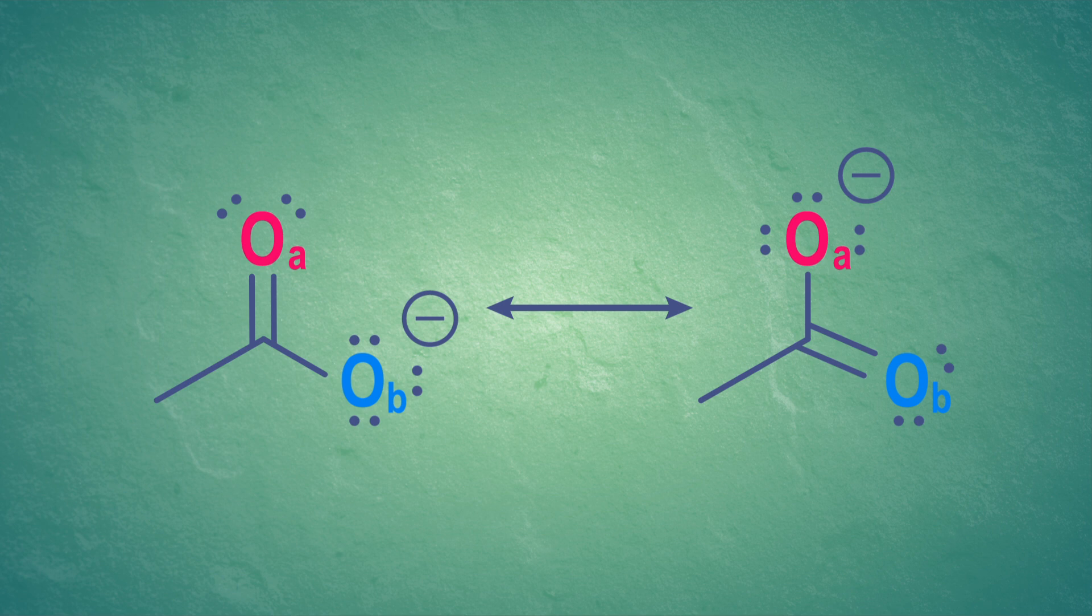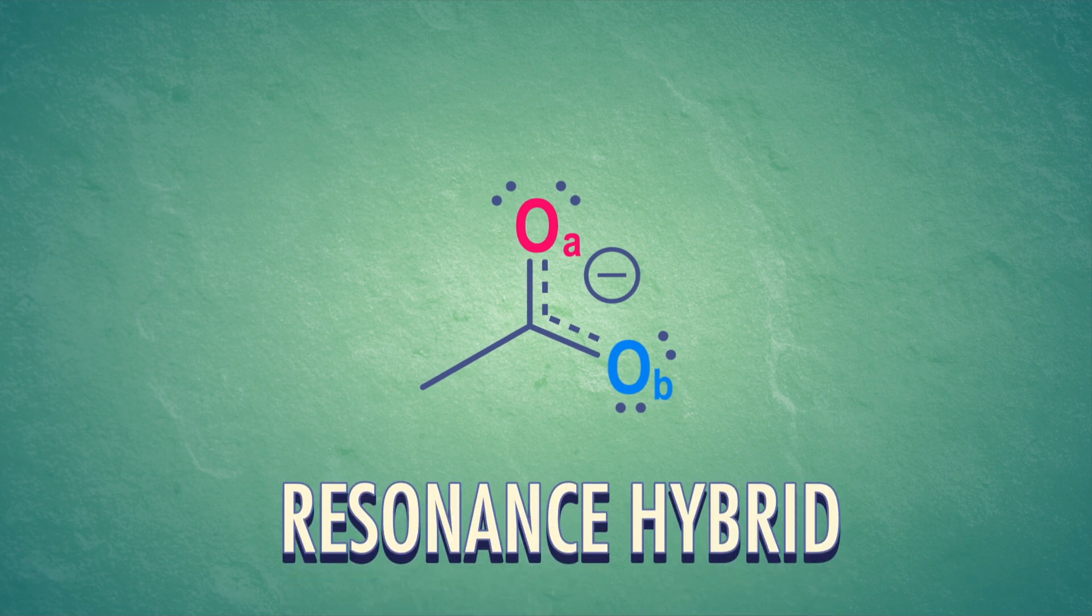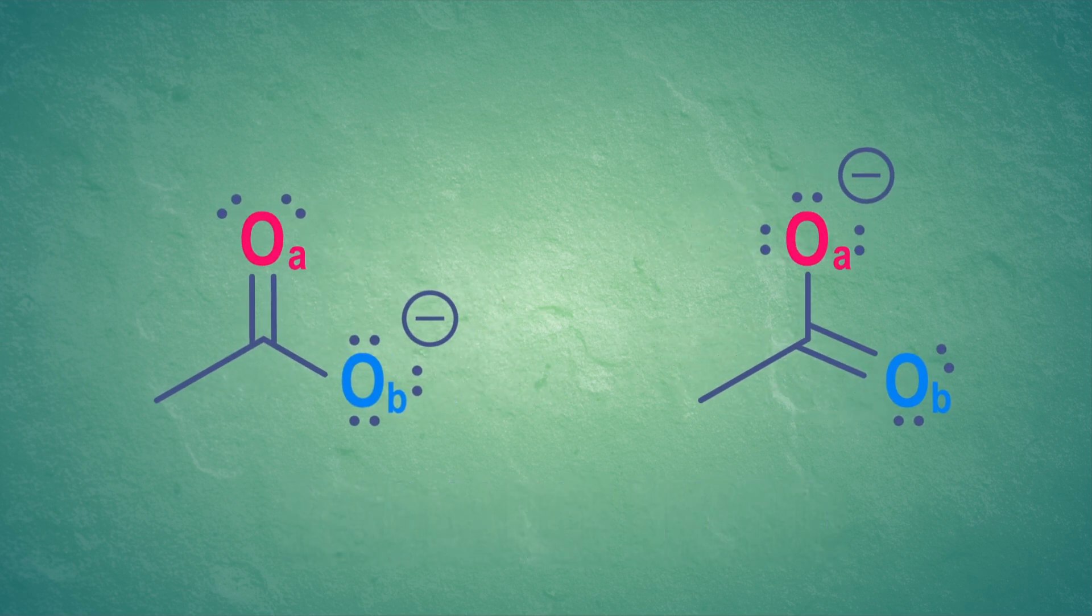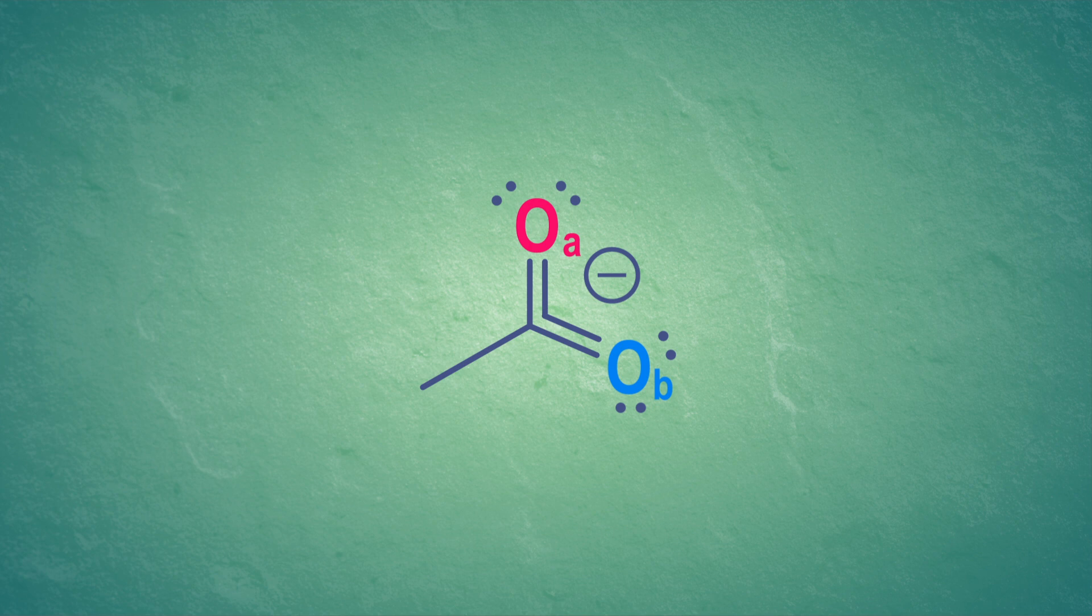All molecules are a blend of their resonance forms, which we call a resonance hybrid. The resonance hybrid is more stable than any individual resonance form, but it's really hard to draw partial bonds. So we usually pick one form to draw at a time. And we know resonance hybrids are a thing because we've measured bond lengths in these molecules.